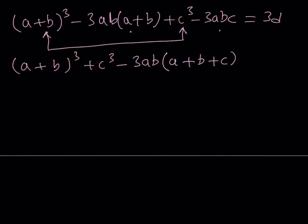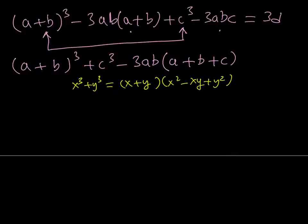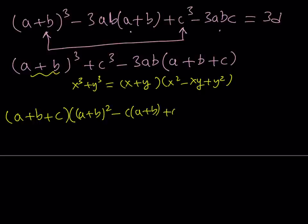Now A plus B, quantity cubed, plus C cubed is a sum of two cubes. Recalling that X cubed plus Y cubed equals X plus Y times X squared minus XY plus Y squared, with X being A plus B and Y being C, I can write: A plus B plus C as the first factor, and A plus B squared minus C times A plus B plus C squared as the second factor. Then minus 3AB times A plus B plus C. Notice that A plus B plus C is a common factor, so we can factor it out.